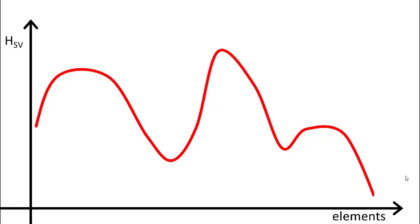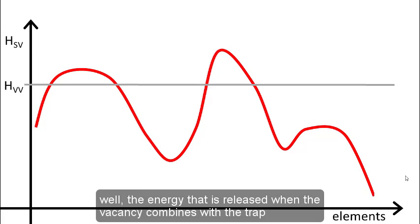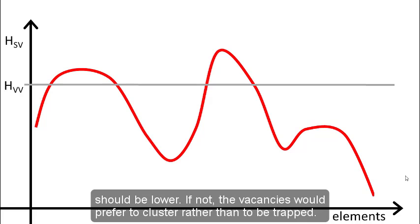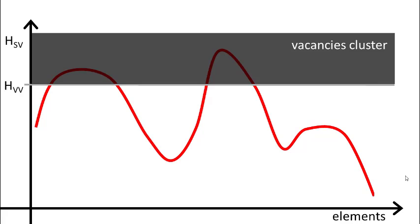Not all of these trapping enthalpies are suitable. If we examine the energy that is released when two vacancies combine, well, the energy that is released when the vacancy combines with a trap should be lower. If not, they prefer to cluster rather than to be trapped. So we can exclude that range, and that would be a range where vacancy clustering happens.